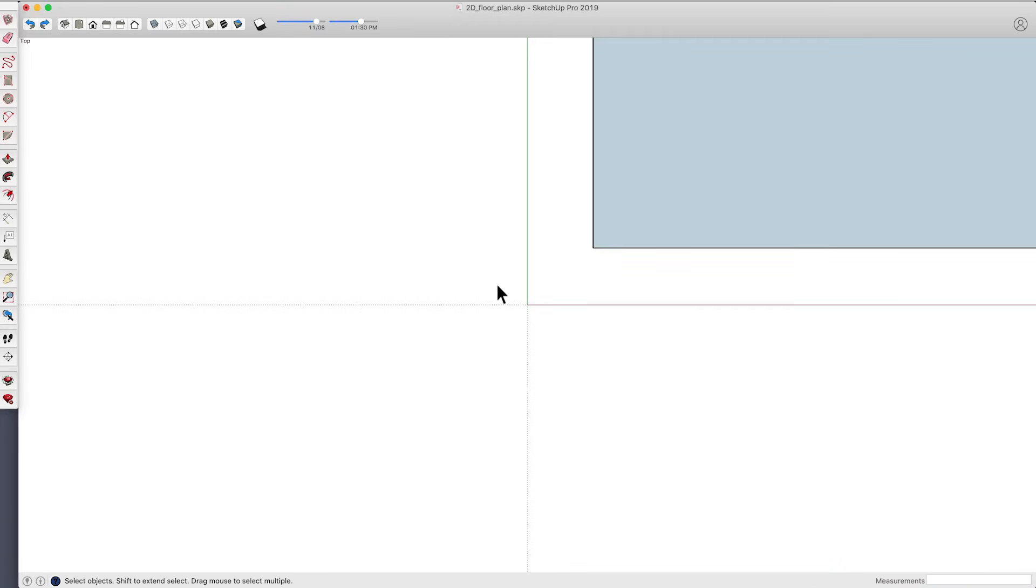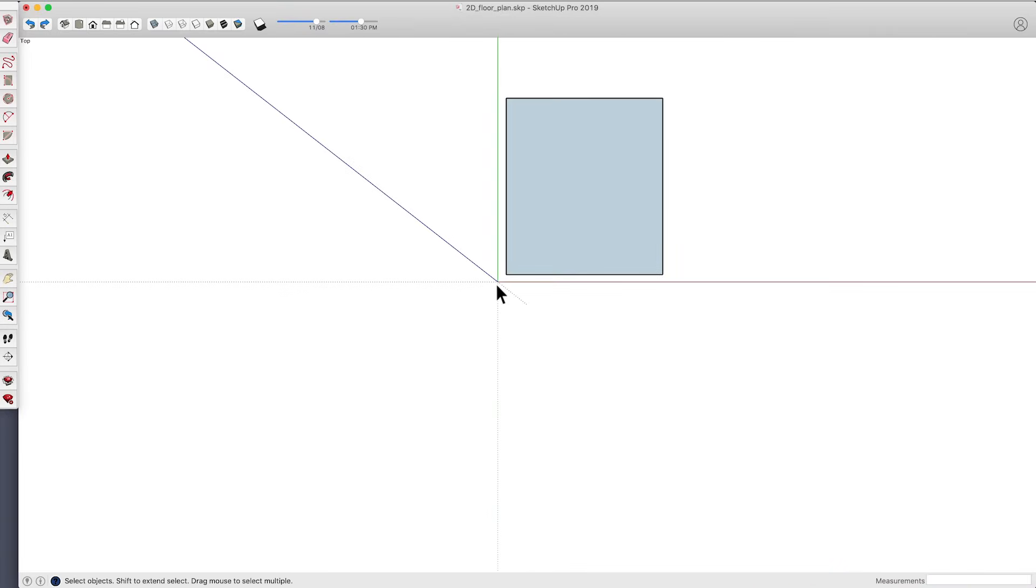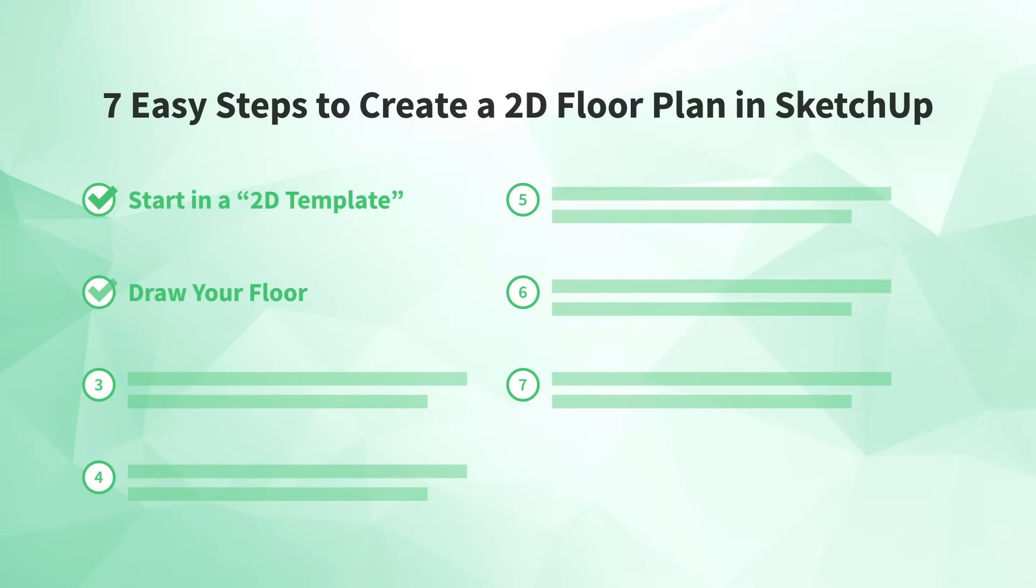If that's the case for you, simply roll your center mouse wheel forward to zoom in and get closer. Or if you've entered your dimensions and you can't see the entire footprint, roll your center mouse wheel back to zoom out. When you zoom, the blue axis will appear, but you can just ignore it. And now you're ready for the next step. Number three, draw your exterior walls.